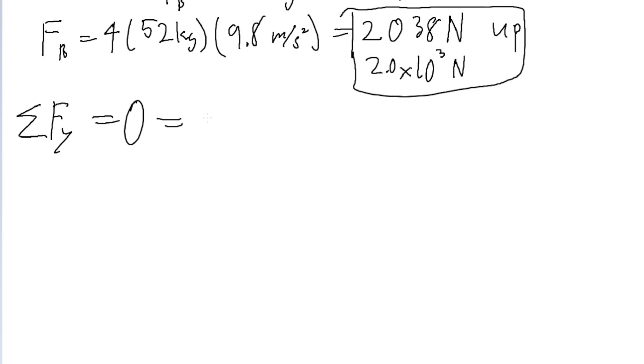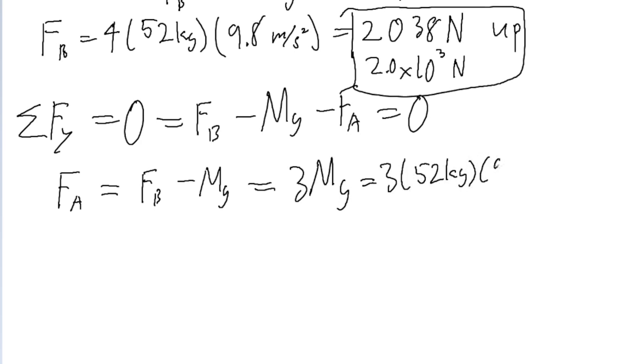So by our coordinate system, f sub b is positive because it points upwards, minus mg, which is downwards, minus f sub a, which is also downwards. And this is all equal to zero. But since we know both f sub b and mg, all we got to do is plug in the numbers we just found earlier to solve for f sub a. We established earlier that f sub b is 4 mg. So 4 mg minus mg is just 3 mg. So this is just 3 times 52 kilograms times 9.8 meters per second squared. Put that into a calculator, and we find an f sub a of 1500 newtons. And this is pointed downwards. So that is the answer to part a of the problem.